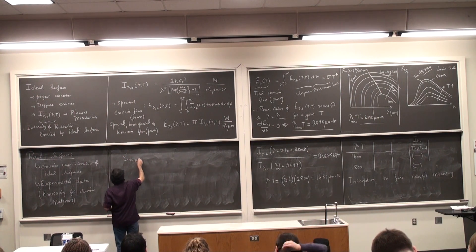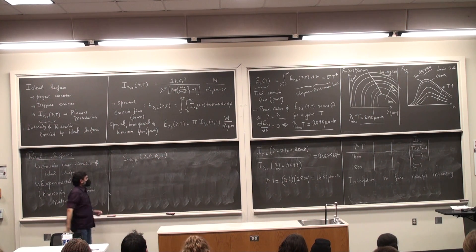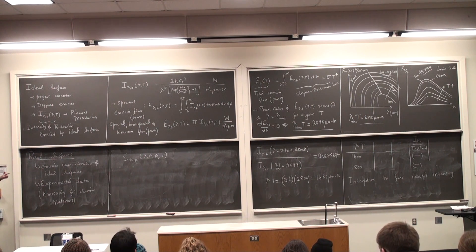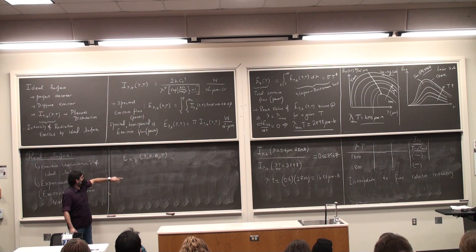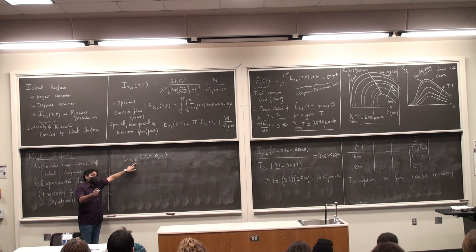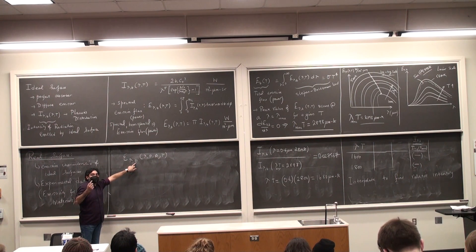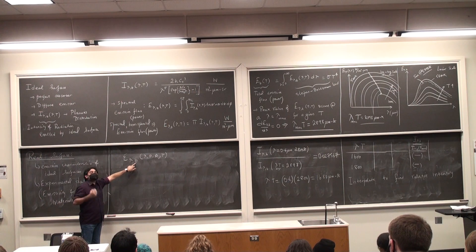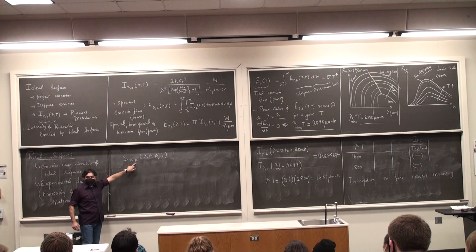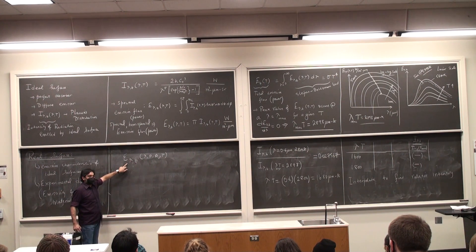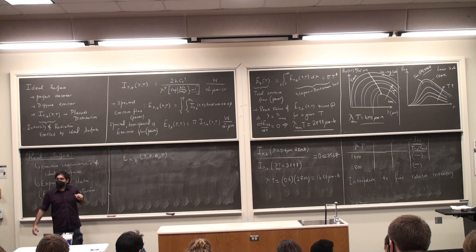Epsilon lambda theta. This one is called the spectral directional emissivity. Spectral because it depends on the wavelength, directional because it depends on theta and you should ask me what about phi. The great simplification is that it is very weakly dependent on phi. So we are going to neglect that dependence. It is dependent only on theta and on lambda.